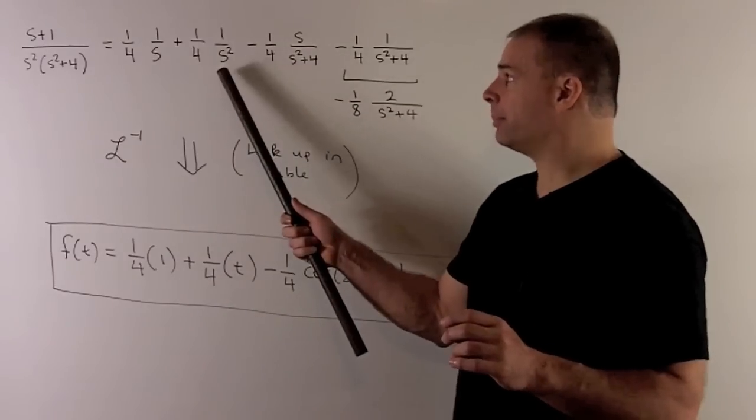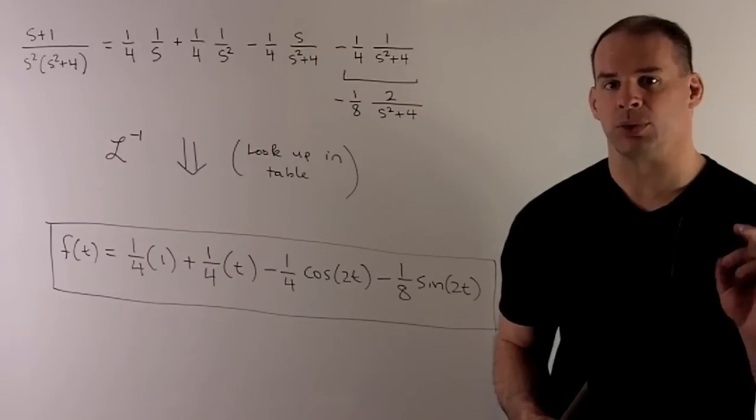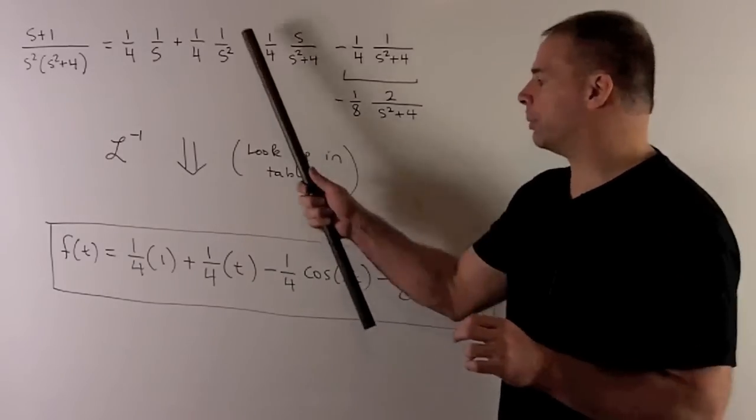Go to the next term. We have 1 over s squared. Laplace transform of t is equal to 1 over s squared. So, we bring that down.